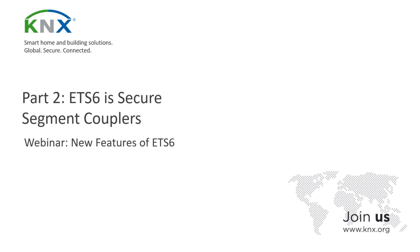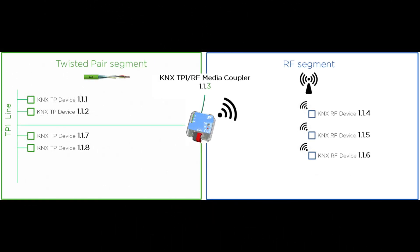ETS 6 supports couplers with segment coupler and security proxy functionality, which bring a lot of benefits for system integrators, allowing them to more easily extend existing projects with new devices supporting security or RF, and all that without having to discard previous customer investments in KNX.